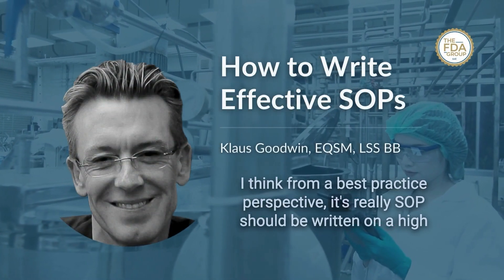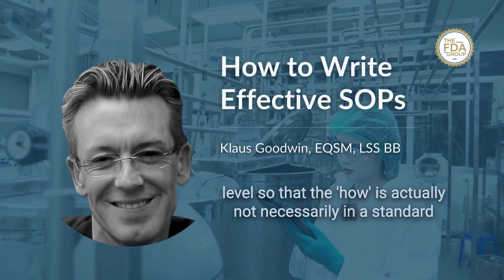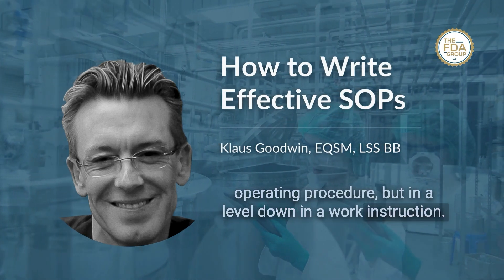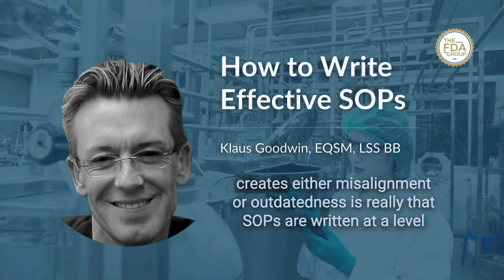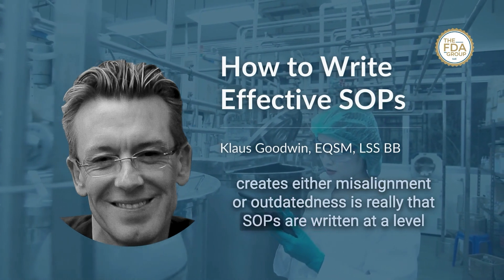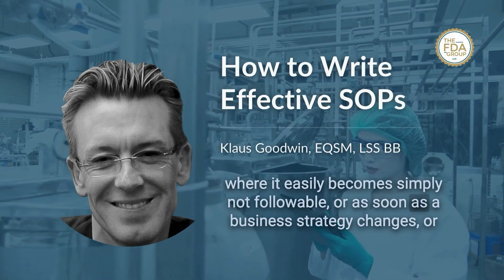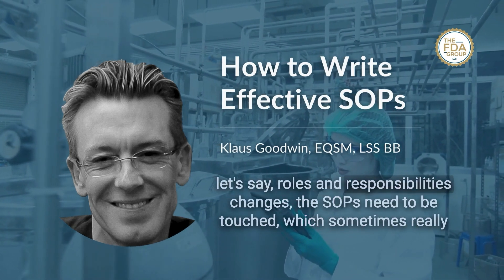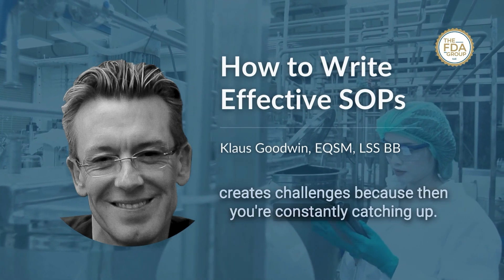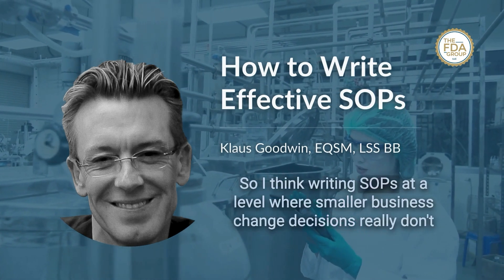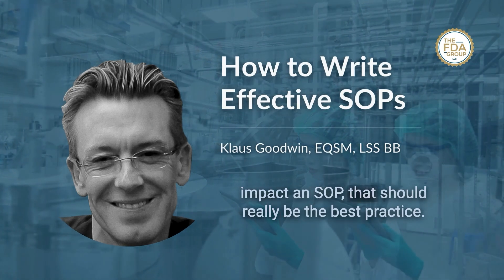From a best practice perspective, SOPs should be written at a high level so that the 'how' is not necessarily in a standard operating procedure, but in a work instruction one level down. What pharmaceutical companies and biotechs often do wrong is write SOPs at a level where they easily become unfollowable, or as soon as a business strategy or roles and responsibilities change, the SOPs need to be touched, which creates constant catch-up challenges. Writing SOPs at a level where smaller business change decisions don't impact them should really be the best practice.